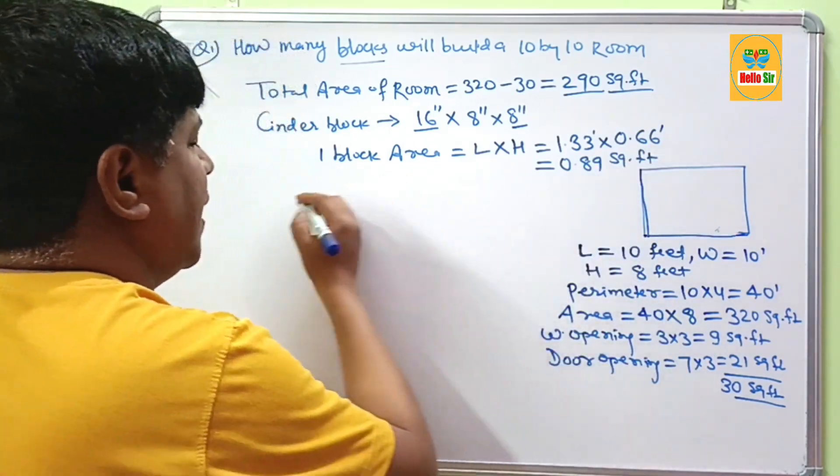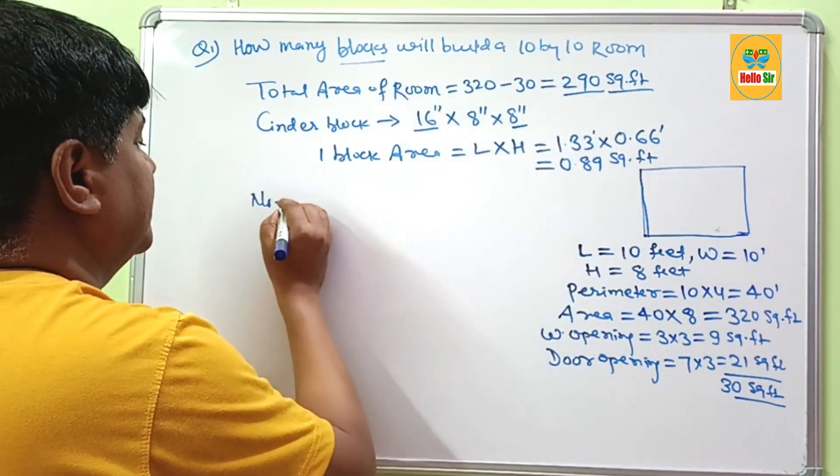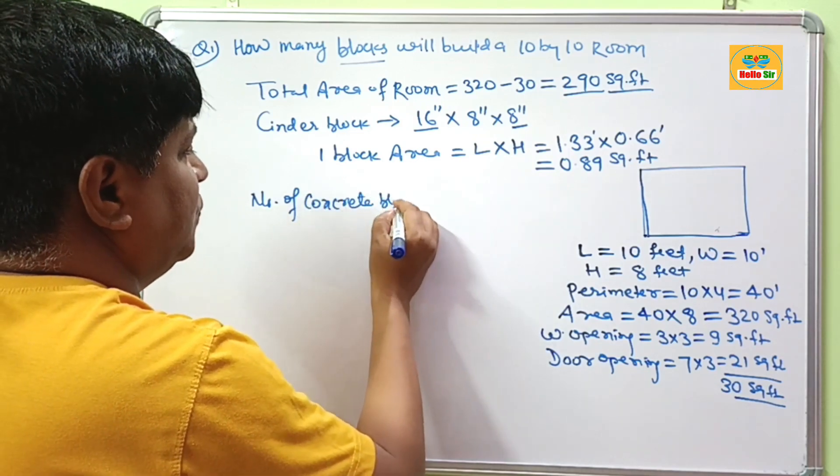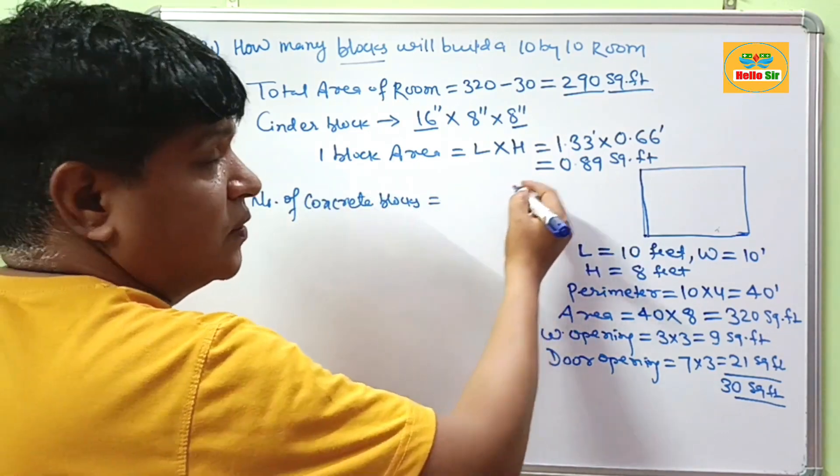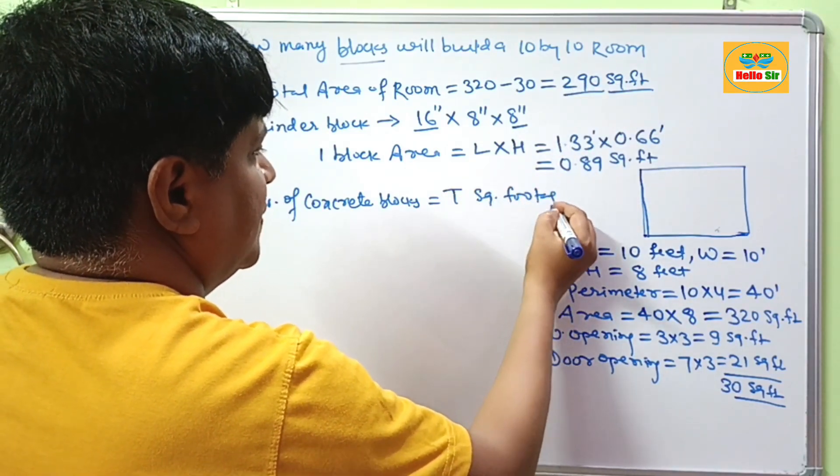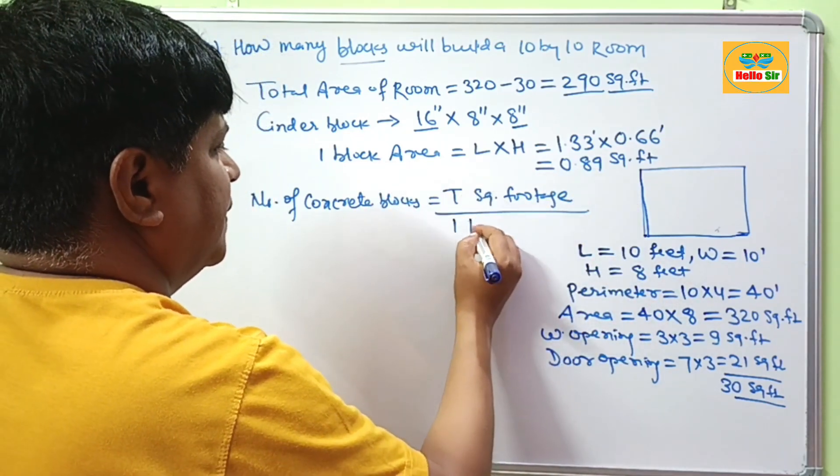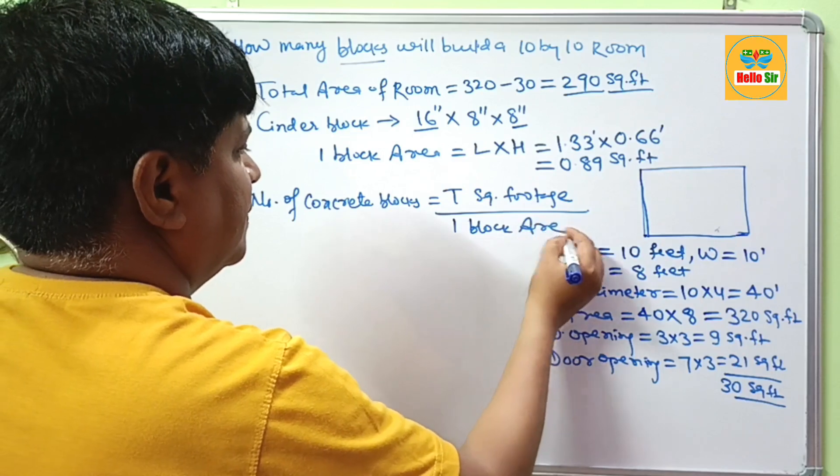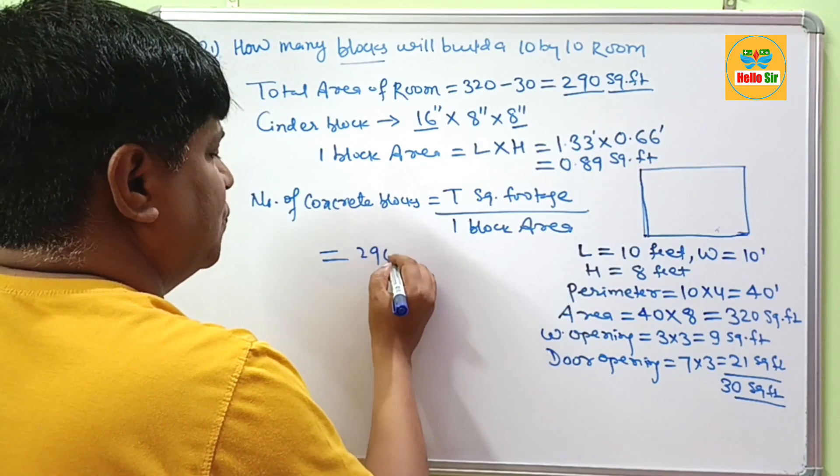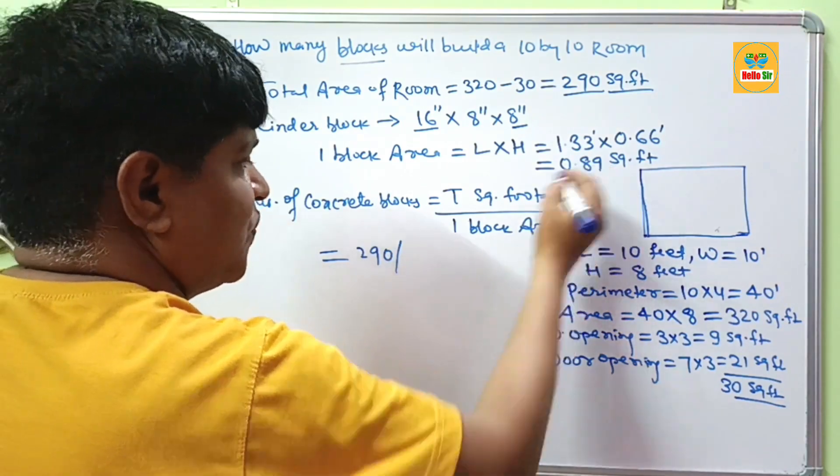If you want to know how many concrete blocks are required, you use the formula: total square footage of room divided by one block area. If you solve this, 290 square feet divided by 0.89 equals about 326 blocks.